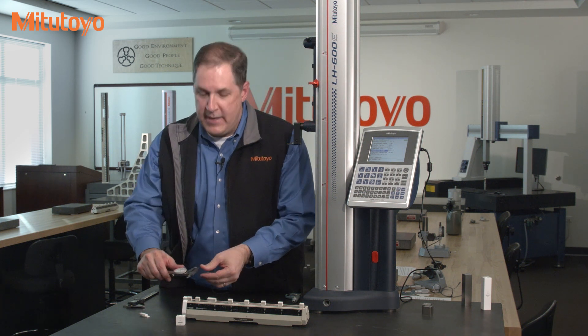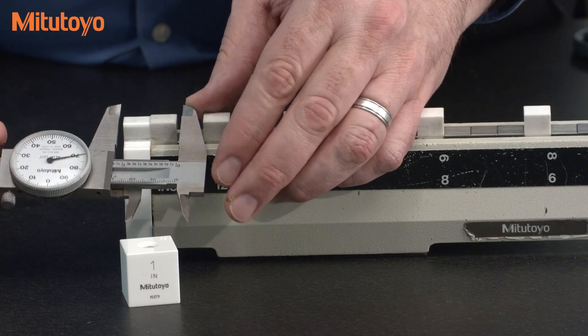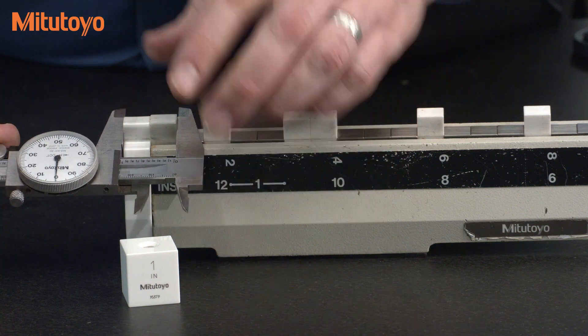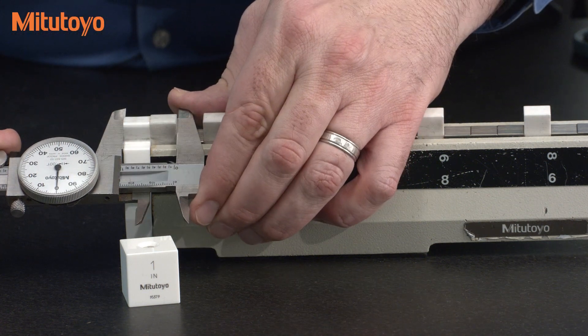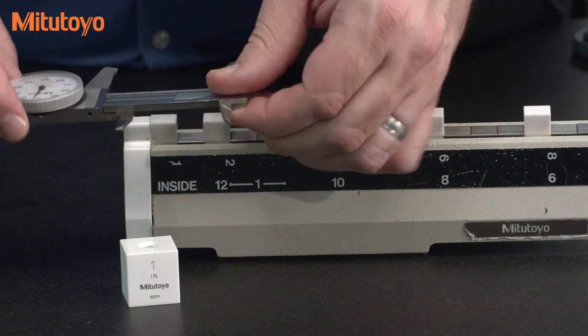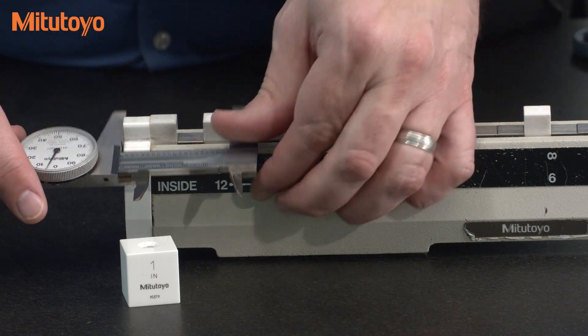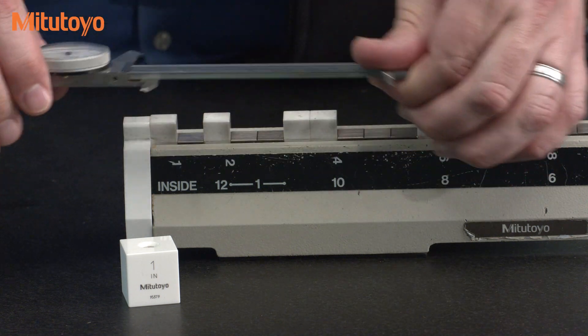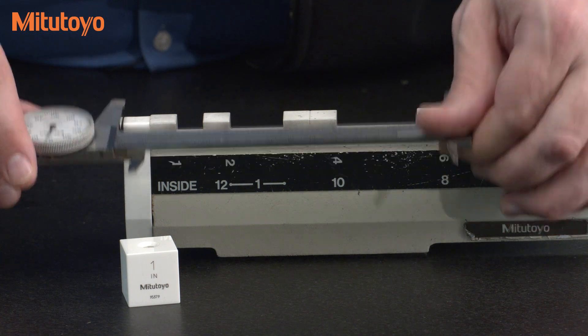So I'm going to repeat the same outside measurements as I did with the digital caliper. So at one inch, and notice that the dial is at the twelve o'clock position. I go to the two inch, once again the twelve o'clock position. I go to four inches, again twelve o'clock position. I go to six inches, again twelve o'clock position.